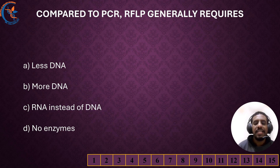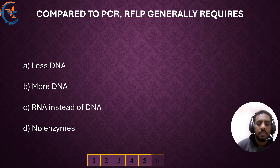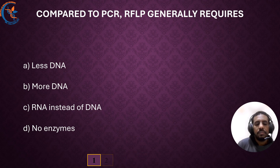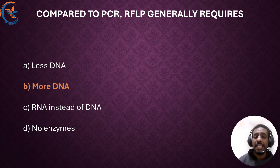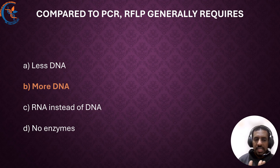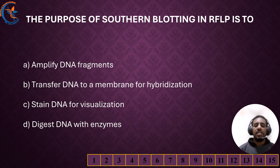Compared to PCR, RFLP generally requires more DNA. RFLP doesn't amplify the target sequence like PCR does. Instead, it relies on restriction enzyme digestion followed by gel electrophoresis and Southern blotting, which typically require microgram quantities of high-quality DNA. In contrast, PCR amplifies specific DNA regions, allowing detection using only nanogram amounts of DNA.